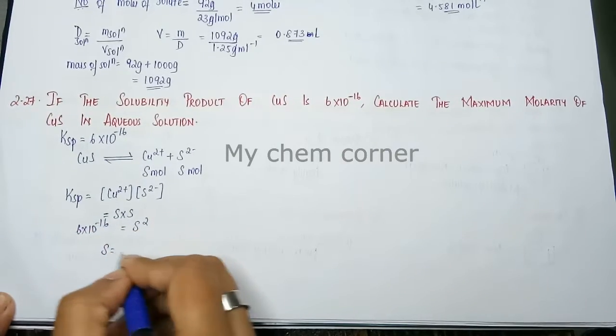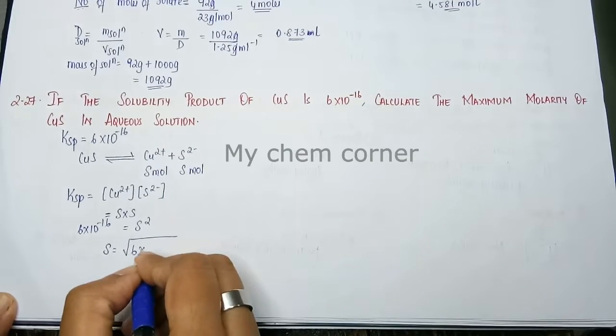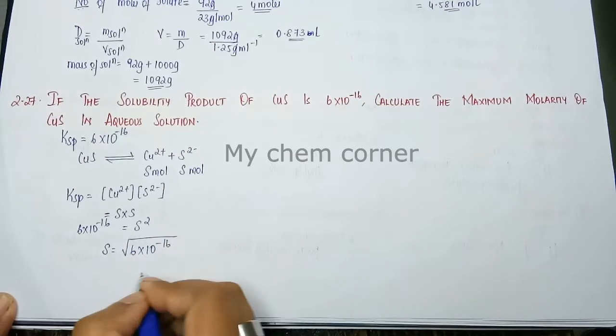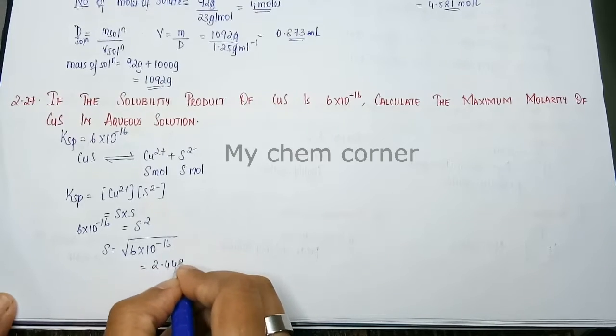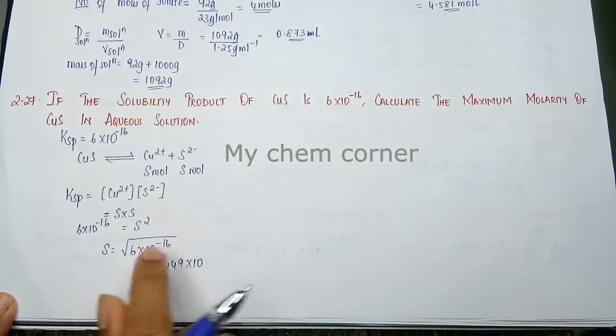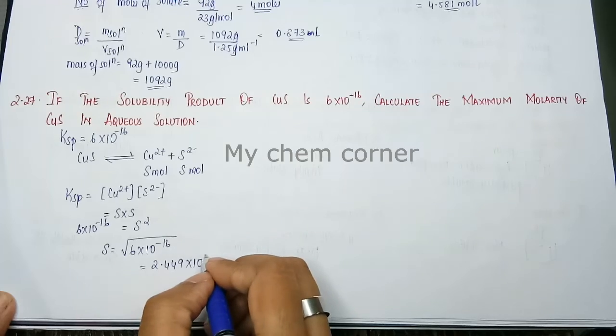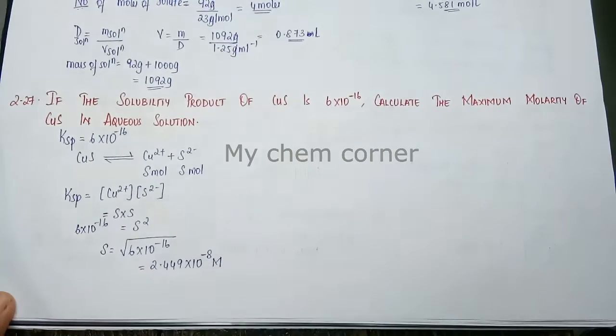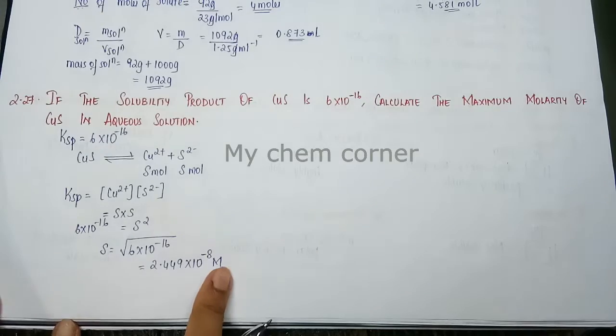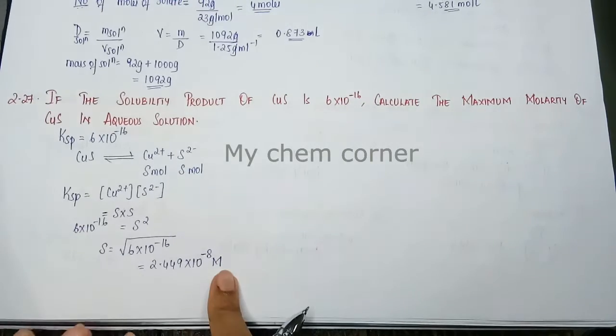When I take S to this side, it becomes root of 6 into 10 to the power minus 16. Root of 6 is 2.449 into 10 to the power 16. When you take root to the power 16, it becomes minus 8, and this is M because we are looking at concentration or the maximum molarity.